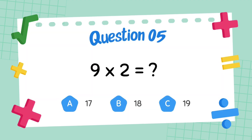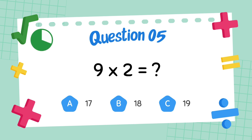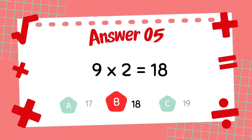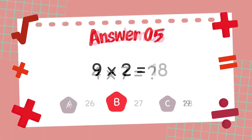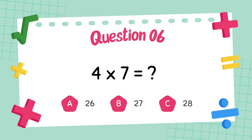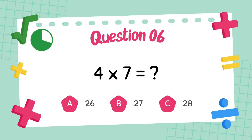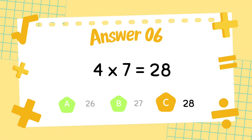What is 9 multiply 2? The answer is 18. What is 4 multiply 7? The answer is 28.